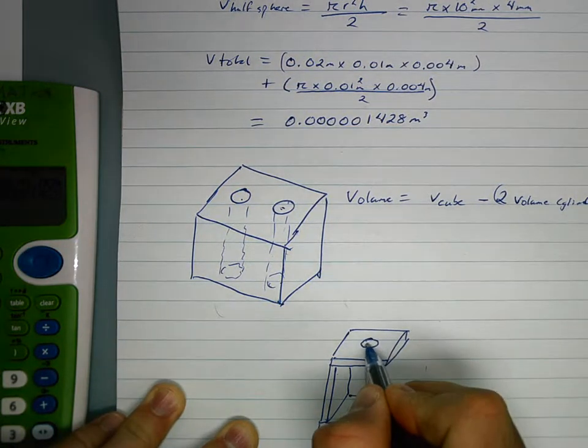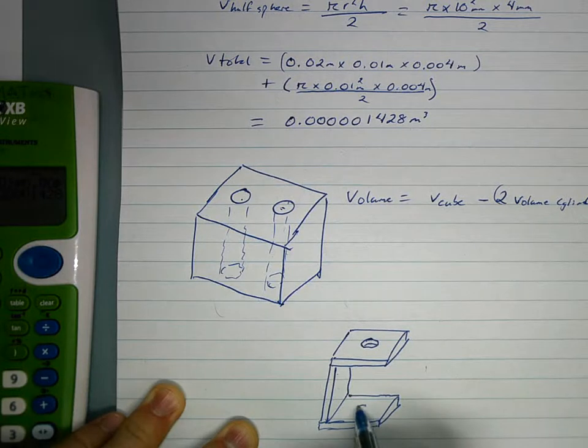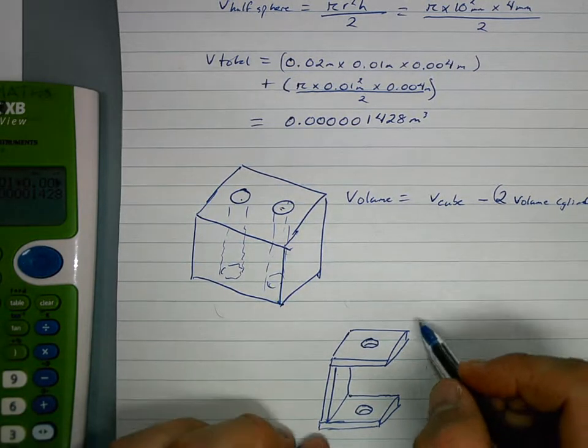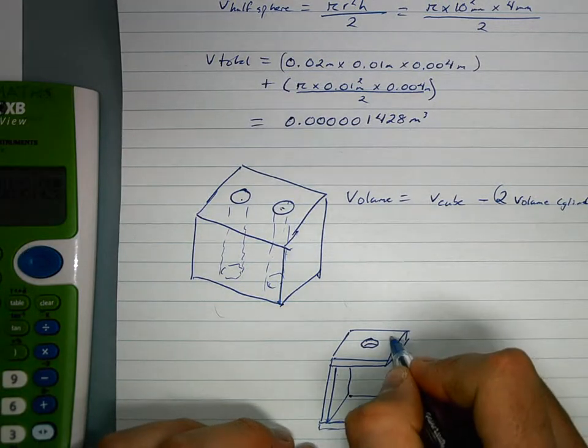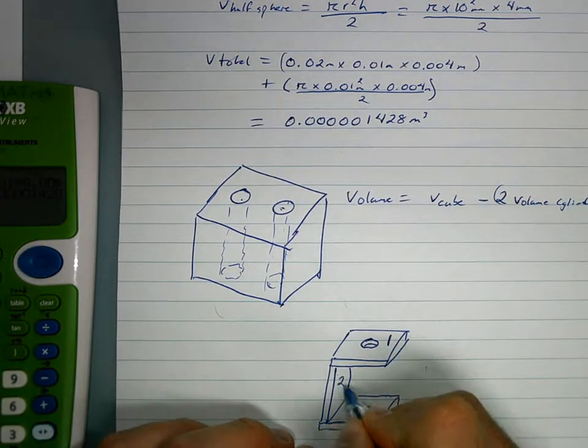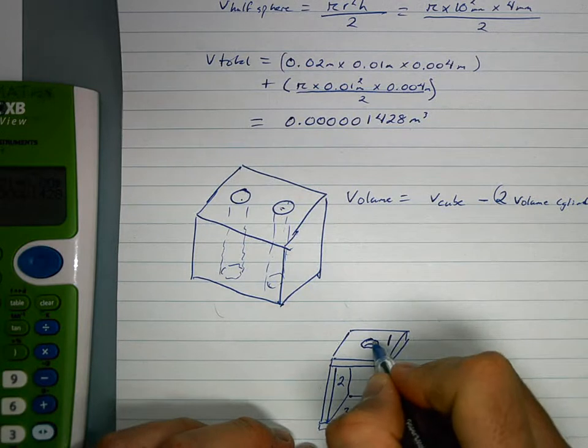And it had a hole in the top and a hole in the bottom. You'd have to add up the volume of number one, number two, and number three, and subtract it from the holes.